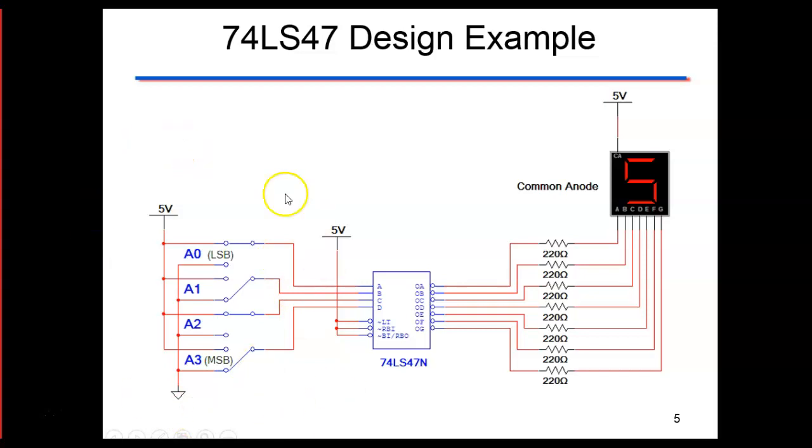So it converts the binary number into a decimal display. This number right here, starting from the left, the most significant bit is zero, one, zero, one, which is the number five.